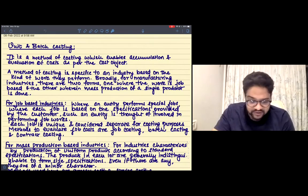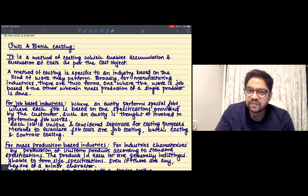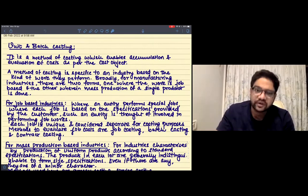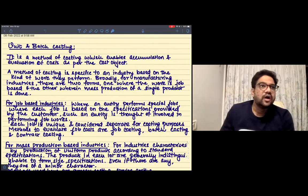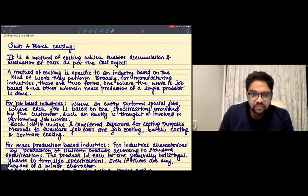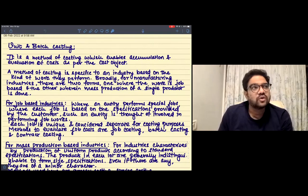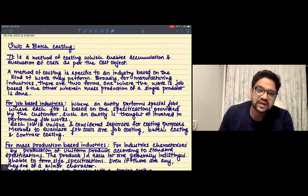So what does it say? Firstly, what are unit and batch costing? It is a method to evaluate the cost, and there are multiple ways of how you do it depending on what kind of an industry you belong to. We've already seen the definition of methods of costing. It is basically industry specific as to the kind of work that you perform.